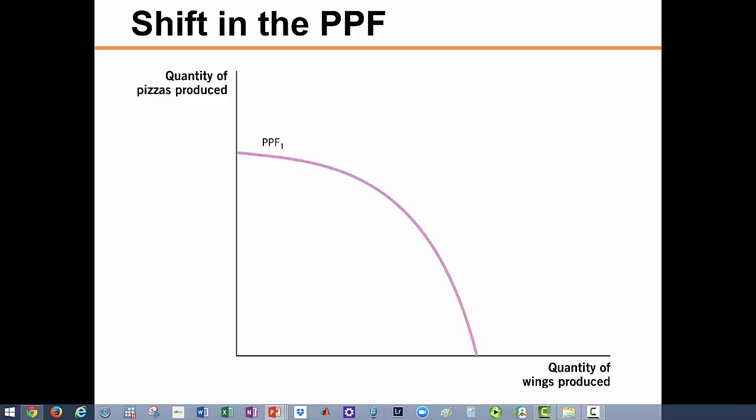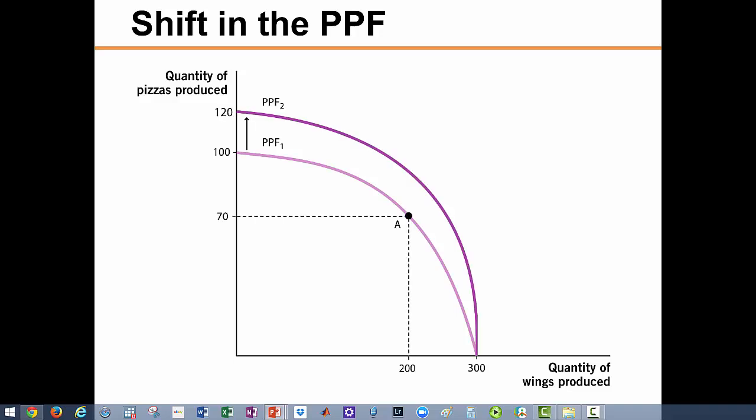Here, a new technology allows us to produce more pizzas, but our wing production capabilities have not changed. With the new technology it becomes possible to produce 120 pizzas in the same amount of time that it previously took to produce 100 pizzas, while the ability to produce wings remains the same. This results in an outward shift in the PPF from PPF1 to PPF2 along the pizza axis. The new pizza technology makes it possible for this economy to move to point B, showing that it is now capable of producing more of both — 80 pizzas and 220 wings.